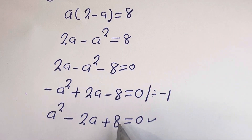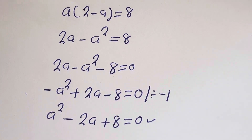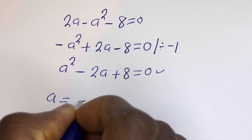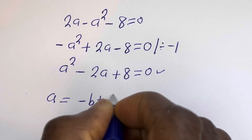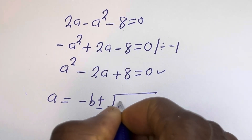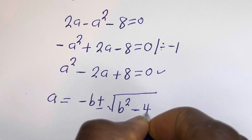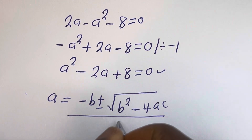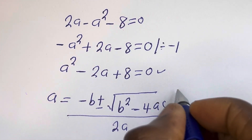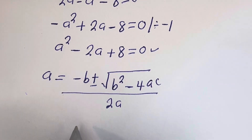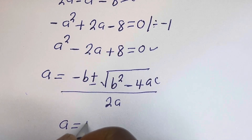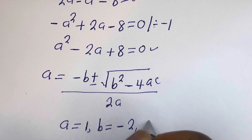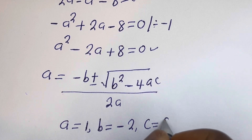This is a quadratic equation. Let's solve this using the quadratic general formula. From this equation, a is equal to 1, b is equal to minus 2, and c is equal to 8.